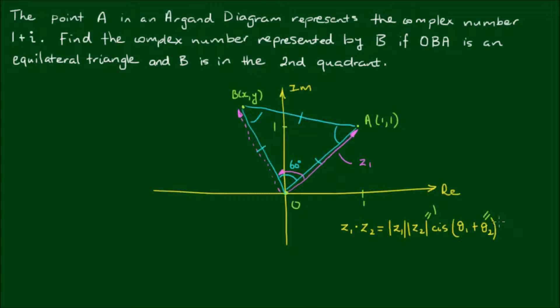So then B I can express as the product of Z1 by Z2, which is equal to the modulus of Z1 by cis of the angle of Z1 plus 60 degrees.